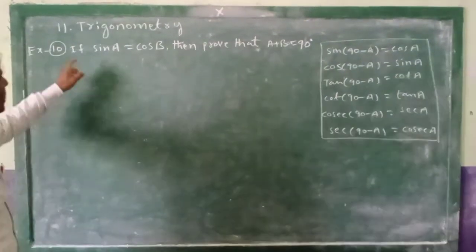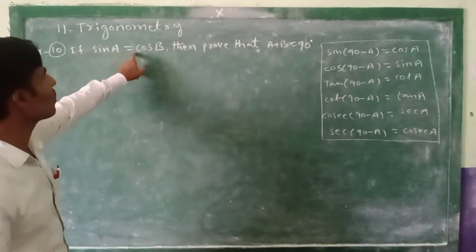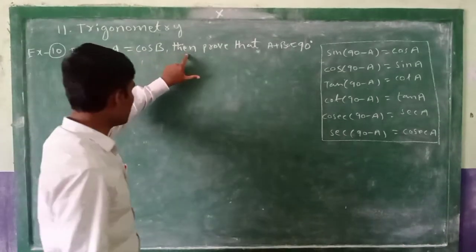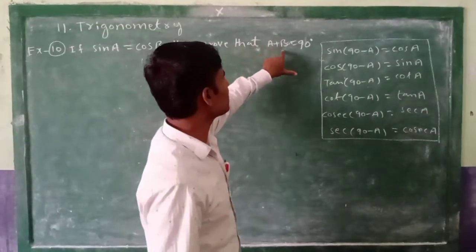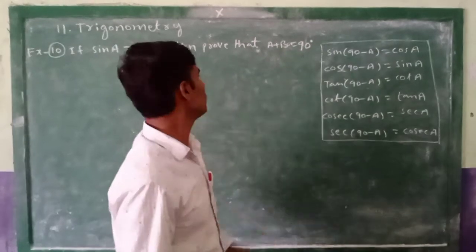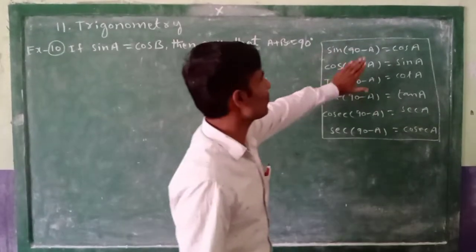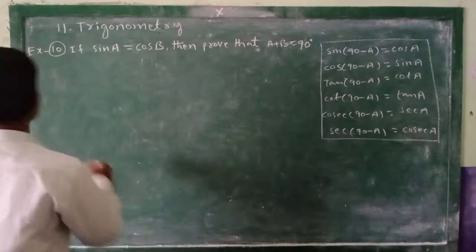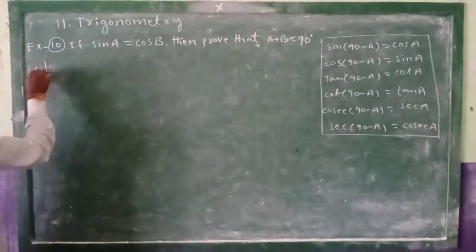See what we have here. If sin A equal to cos B, then prove that A plus B equal to 90 degrees. So this formula we must use here also. See the solution here.